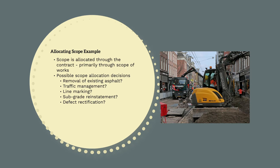Let's go through an example so you can see what we mean when we talk about scope allocation. Let's imagine we're procuring a subcontractor to reinstate and replace a section of tram tracks, similar to the works shown in the picture on the right. Some of the possible scope allocation decisions we'd be faced with include: should the subcontractor be responsible for the removal of existing asphalt, traffic management, line marking, subgrade reinstatement, or defect rectification? These are the types of things that would need to be clearly defined in the scope of works.